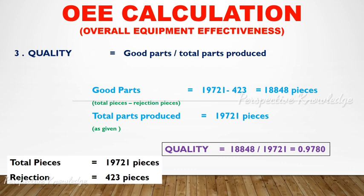The third factor is quality. Quality is good parts divided by total parts produced. The total output is 19,721 pieces and rejections are 423 pieces, so good parts are 19,298. The ratio is 19,298 divided by 19,721, which equals 0.9780 — that is 97.8% quality.